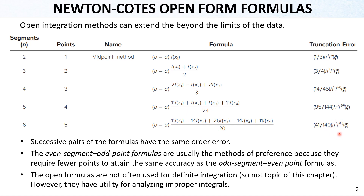You can see that after each two segments the order of the error increases by one magnitude — from three to five, from five to seven — and successive pairs share the same error order. Since the magnitudes are the same within each pair, we can prefer the simpler formulation. The simpler ones between each pair are equally accurate but less complex. These are the open methods, but we will not cover them in detail in this chapter — we will show the closed methods in the following slides.